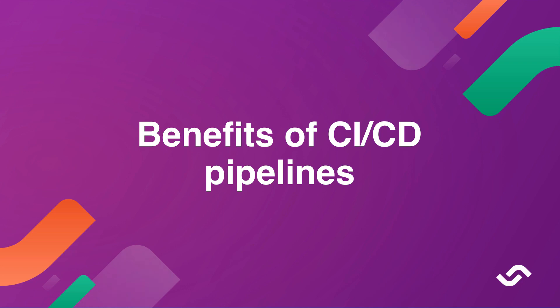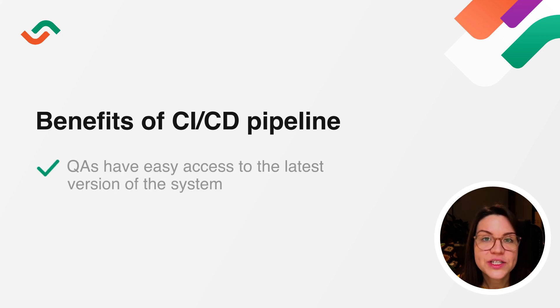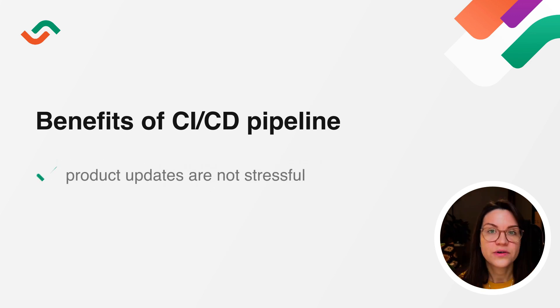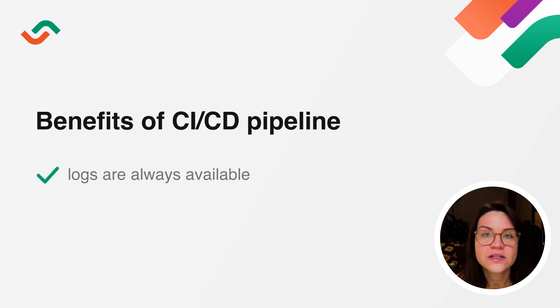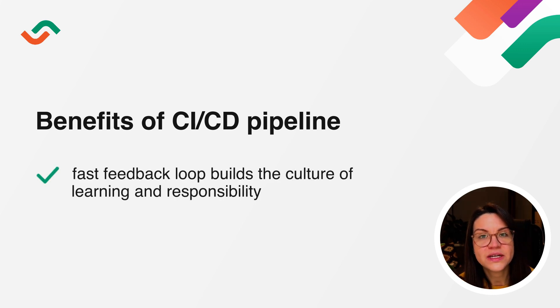So what are some of the benefits of a CI/CD pipeline? A CI/CD pipeline doesn't only make the existing process more efficient. Developers stay focused on writing code and monitoring the behavior of the system in production. Quality assurance engineers and product stakeholders have easy access to the latest version of the system. Product updates are not stressful, logs of all code changes are available for inspection at any time, and in case of a problem, rolling back to the previous version is just a push of a button. A fast feedback loop also helps to build an organizational culture of learning and responsibility.